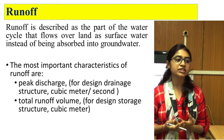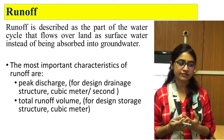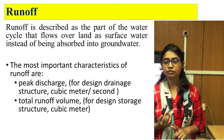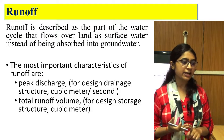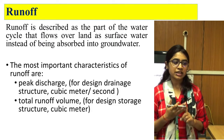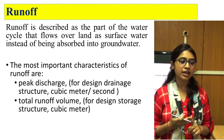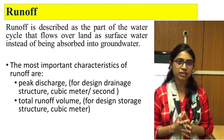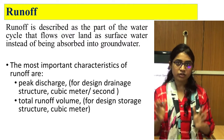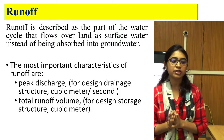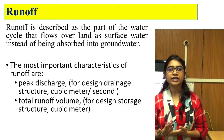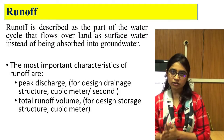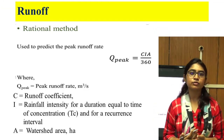Runoff is the part of the water cycle that flows over land as surface water instead of being absorbed into groundwater. Runoff is calculated in two forms: peak discharge and total runoff volume. For a drainage structure, we calculate peak discharge in cubic meters per second. For a storage structure, we calculate the total volume in cubic meters. Since grass waterway is a drainage structure, we calculate peak discharge. For calculating runoff, we use the rational method.